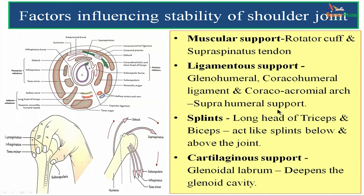What are the factors influencing the stability of the shoulder joint? They are categorized as muscular support, ligamentous support, splints, and cartilaginous support. Muscular support is offered by the rotator cuff and supraspinatus tendon. Ligamentous support is provided by the glenohumeral ligament, coracohumeral ligament, and coracoacromial arch, forming suprahumeral support. The long head of triceps and long head of biceps act as splints below and above the joint respectively. Cartilaginous support is offered by the glenoidal labrum, which deepens the glenoid cavity.